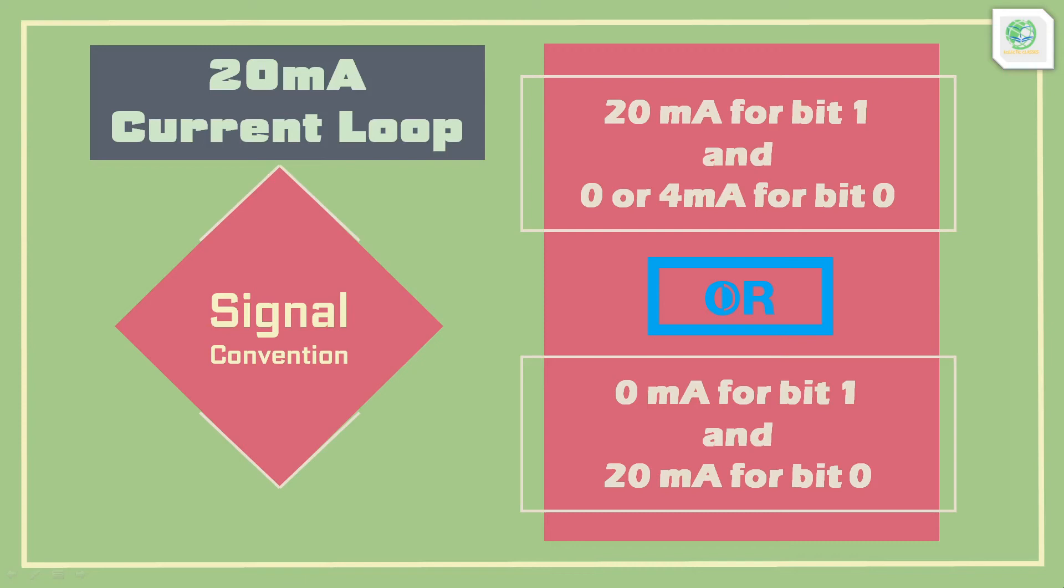Only 0mA for bit 0 has the disadvantage of line cut not being detected, as any line cut could be treated as bit 0 transmission.